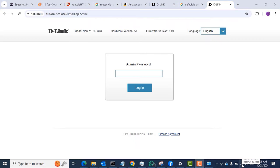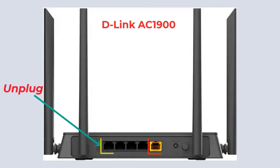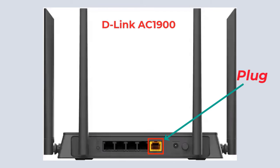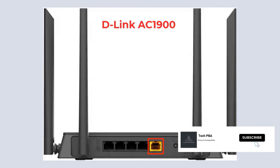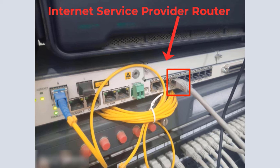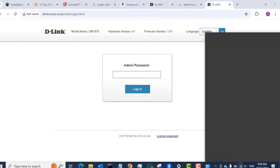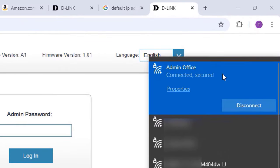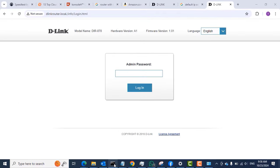From here, unplug the cable from any of the four LAN ports — in my case I had it in port one — and plug that same cable into the yellow WAN port at the back of the Wi-Fi router. Once done, plug the other end of that cable into the ISP's internet router as shown in the image. I plugged it into the appropriate port on my ISP's router, and once you connect those two cables to the correct ports on the respective devices, your internet will start working.